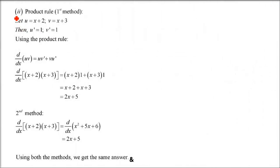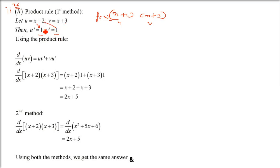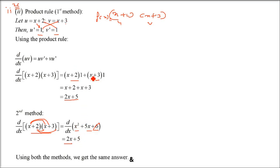For part (b), f(x) = (x+2)(x+3). Taking u = (x+2), v = (x+3), we get u' = 1 and v' = 1. By product rule: (x+2)·1 + (x+3)·1 = 2x + 5. By normal multiplication: x² + 5x + 6, differentiated gives 2x + 5. Both are the same.